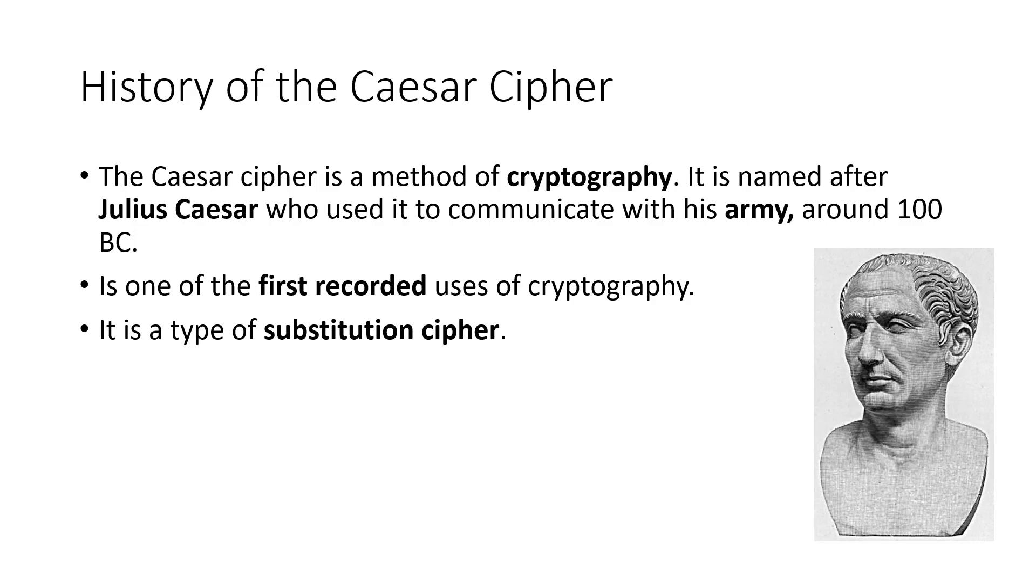The history of the Caesar cipher: The Caesar cipher is a method of cryptography and it is named after Julius Caesar who used it to communicate with his army around 100 BC. It's one of the first recorded uses of cryptography and it is a type of substitution cipher.